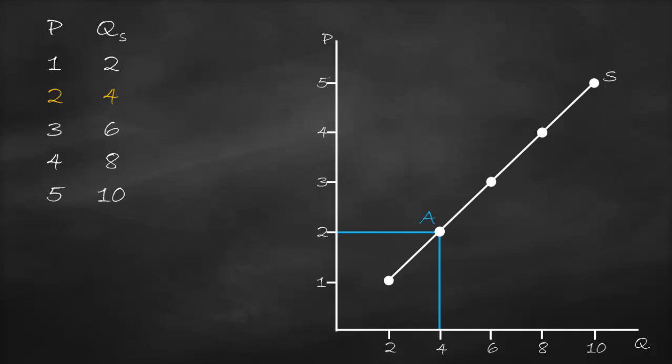Now what will happen if the price of chocolate increases from two to three? From the producers' perspective, this means that they have a motive to produce more, so they will produce six units. From the graph, at a price of three, I will move horizontally until I intersect with the supply curve, and then I will go vertically — I will get a quantity supplied of six. This point on the supply curve I'm going to label as B. Therefore, when the price changed from two to three, quantity supplied increased from four to six — it means that I moved from point A to point B on the same supply curve.